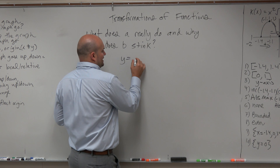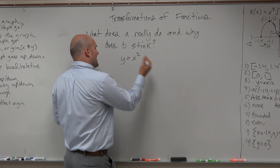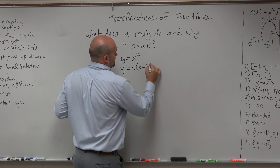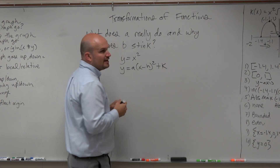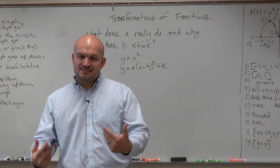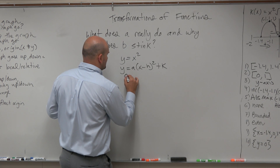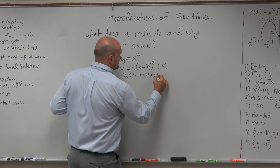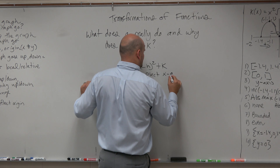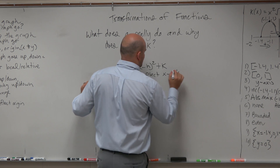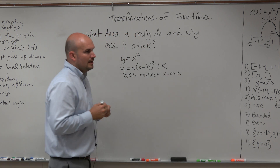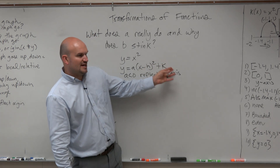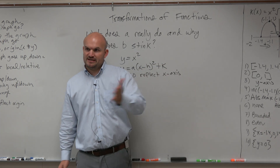When we looked at y equals x squared, then I added in this 'a'. The important thing is we said when 'a' was less than 0, it reflected the x-axis. But that's all we said. We didn't give any other values because h and k — we know those were shifting.